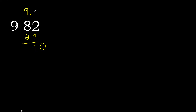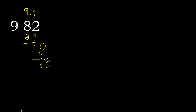9 multiplied by 2 is greater, so 9 multiplied by 1 is 9 — not greater. Subtract: 10 minus 9 is 1. Complete. The decimal point is here. Again, 10.